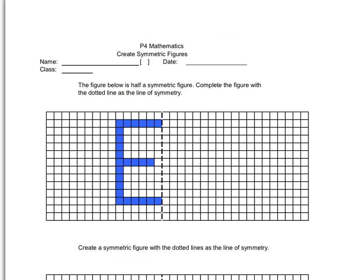Now for this part you will need to take out your worksheet. So for the first example, the figure below is half a symmetric figure. You are required to complete the figure with the dotted line as the line of symmetry. So this E shape here, the figure here, is half a symmetric figure. This is the line of symmetry. We are supposed to complete it on this side.